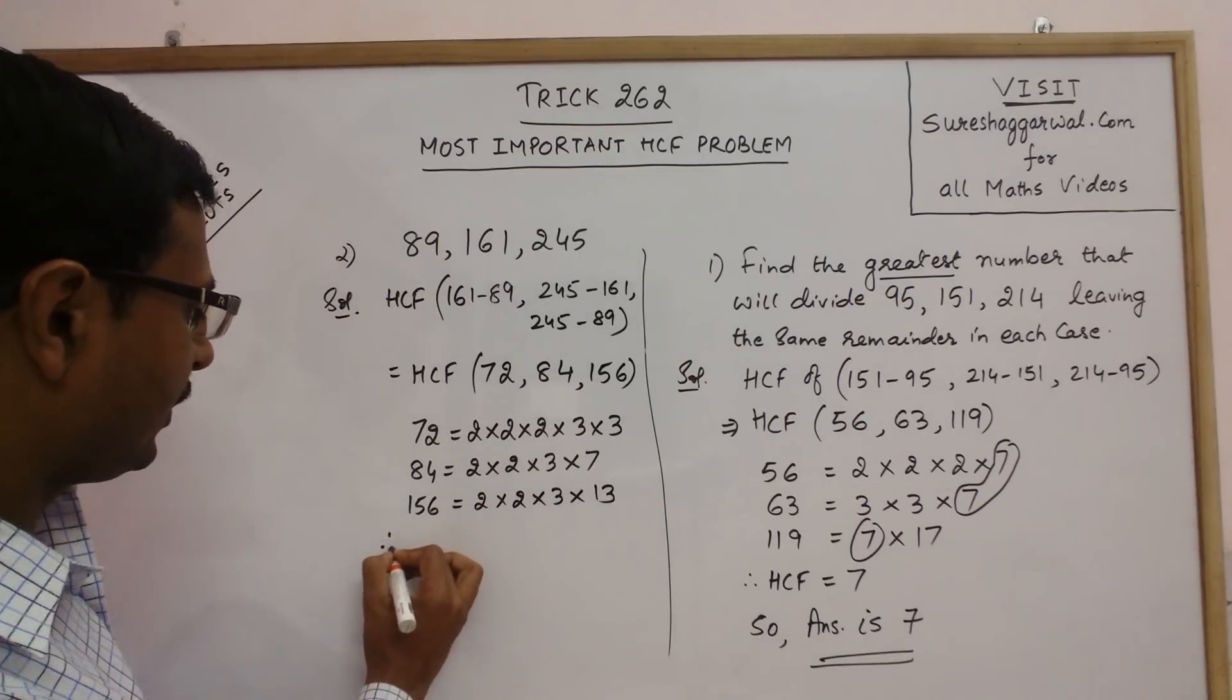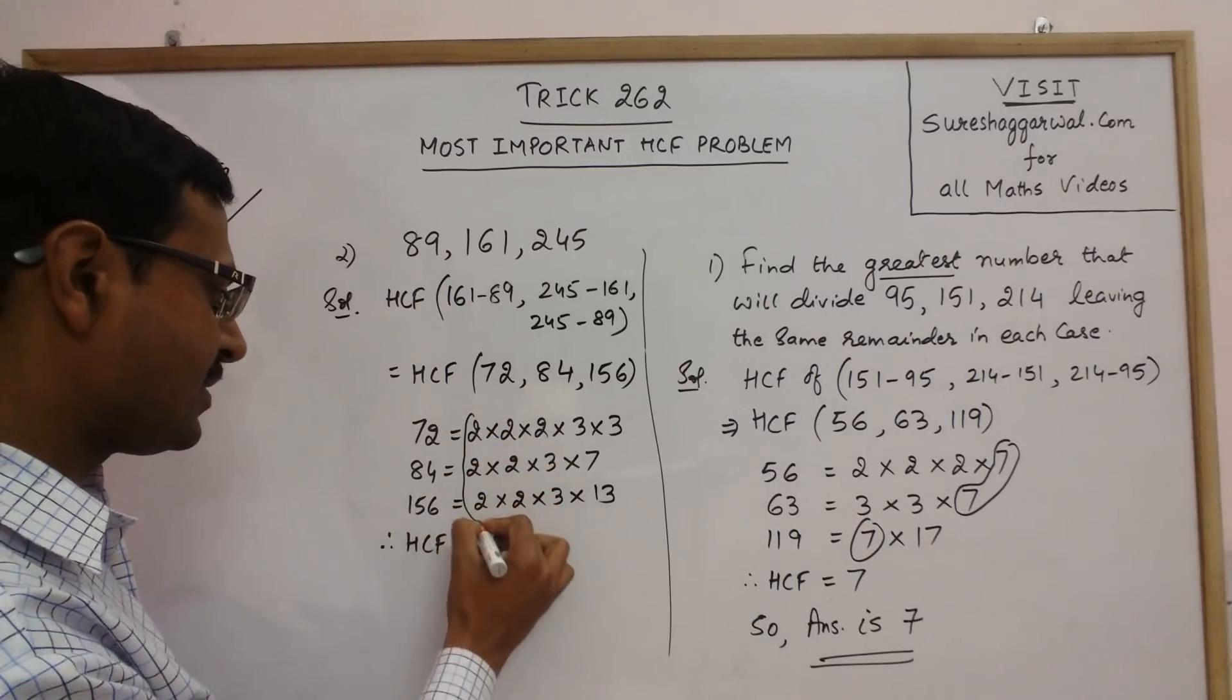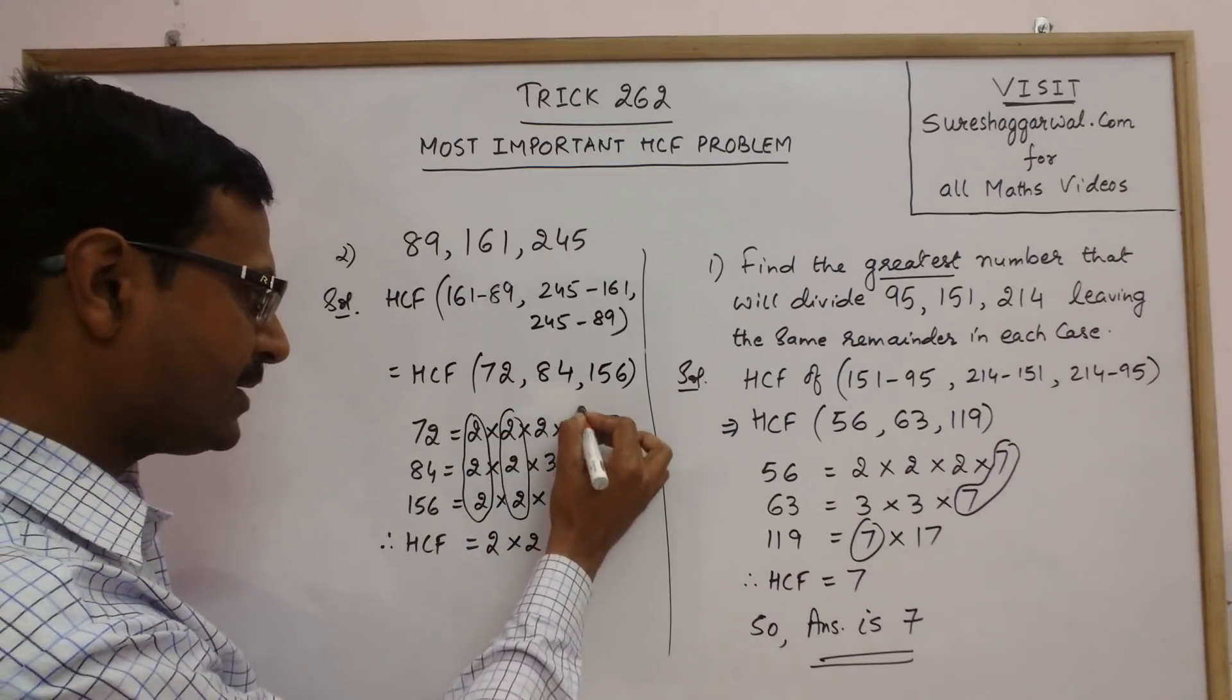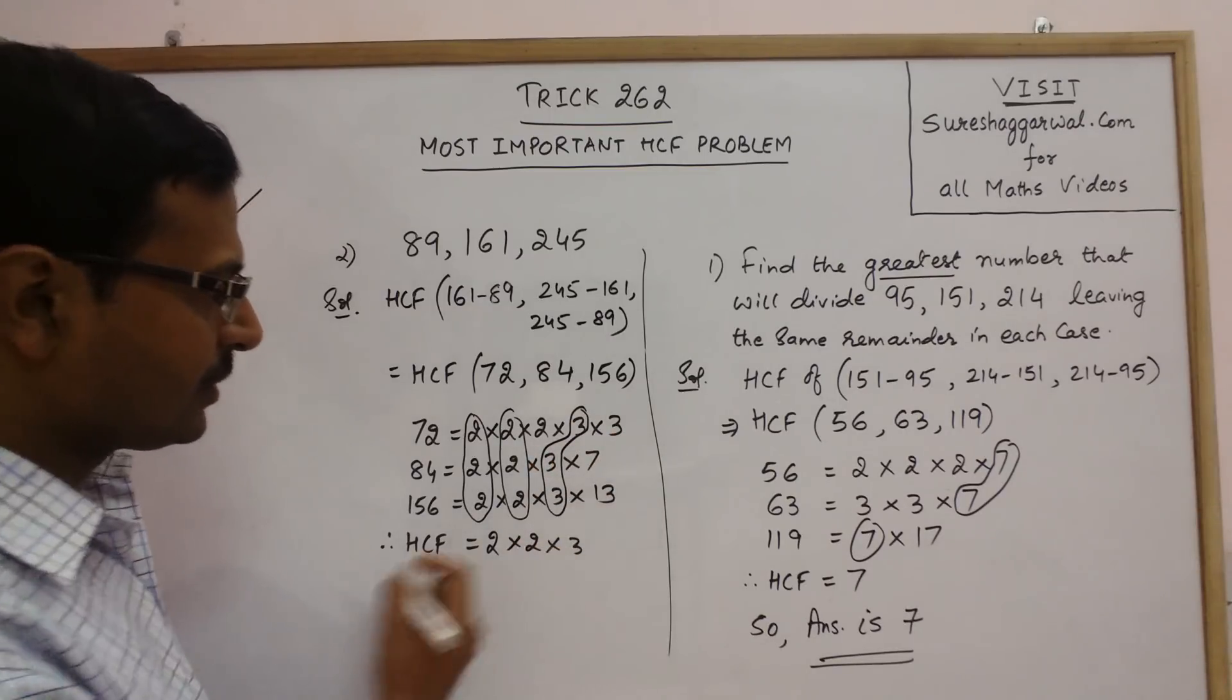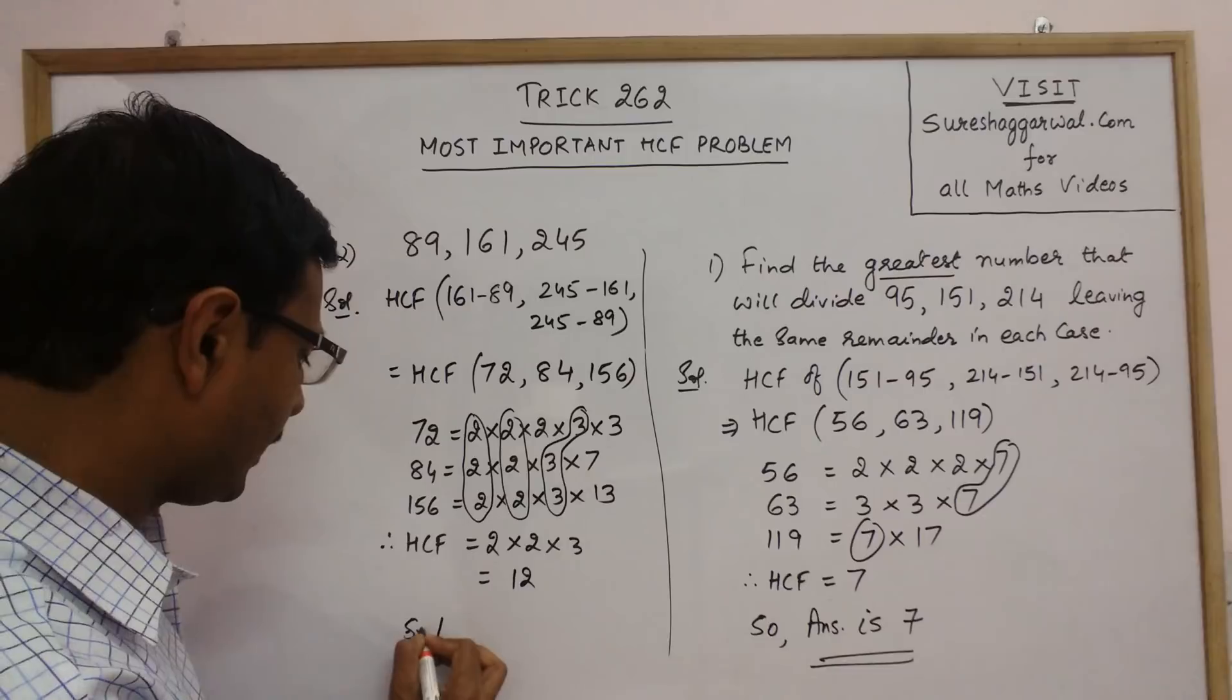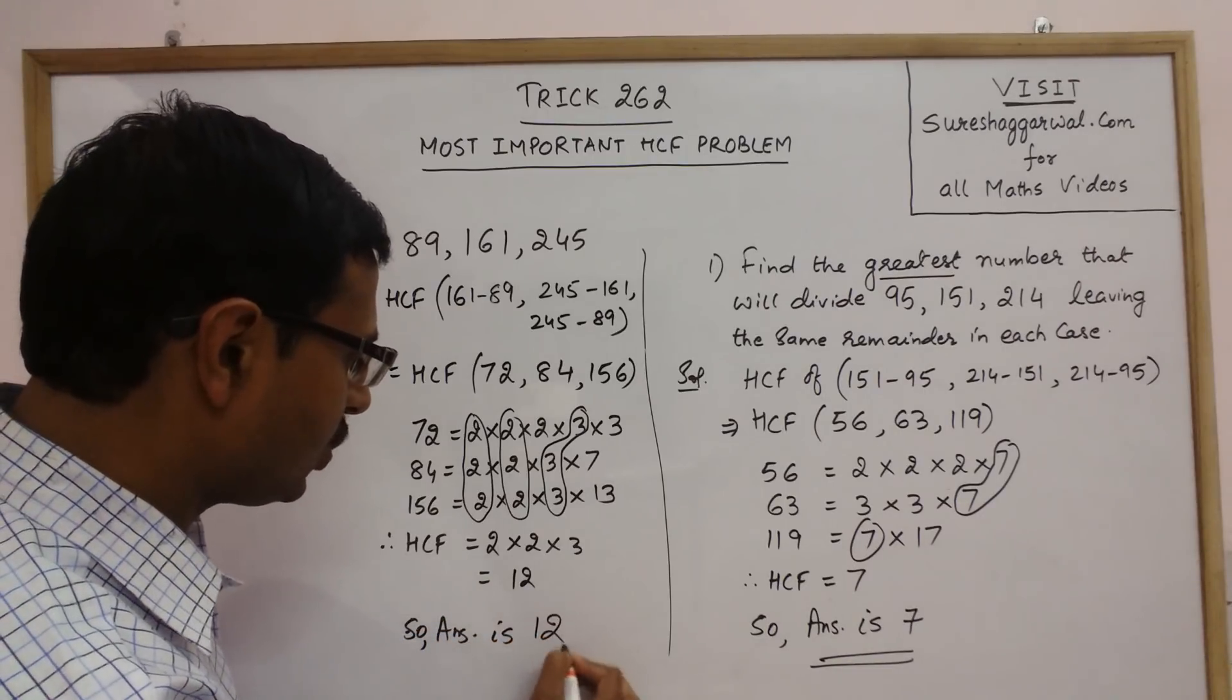So HCF of these three numbers is the common factors. There is one 2 which is common. There is another 2 which is common, and there is a 3 which is common. No other factor is common. Therefore, the HCF is 2×2×3, so the required answer, that is the greatest number, is 12.